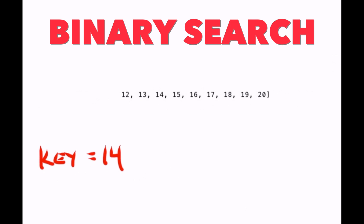We just keep repeating that process. We find the value at the midpoint of the array — let's call that 16. Compare 14 to 16; we know 14 is less than 16, so we know we can get rid of everything 16 and above. Now we're working with a much smaller array. Find the value at the midpoint — in this case it happens to be 14. So you compare 14 with 14; it is the value we're looking for, so we know it is in the array. You keep chopping it in half until you find it, or don't find it.